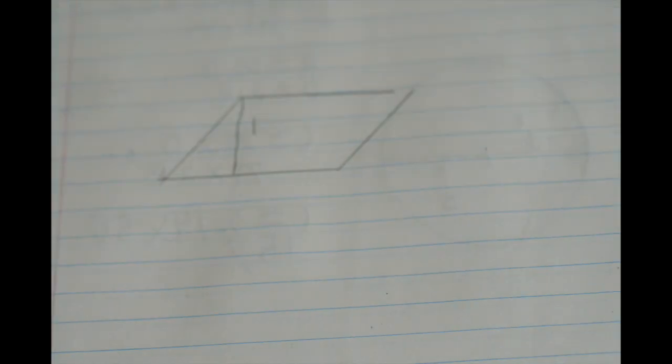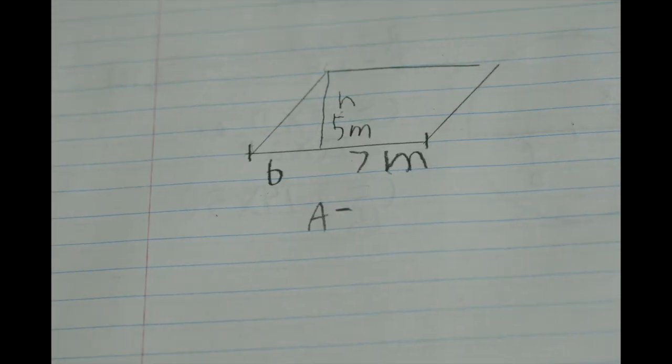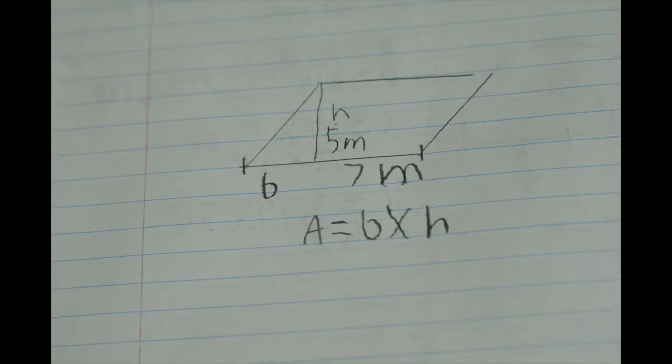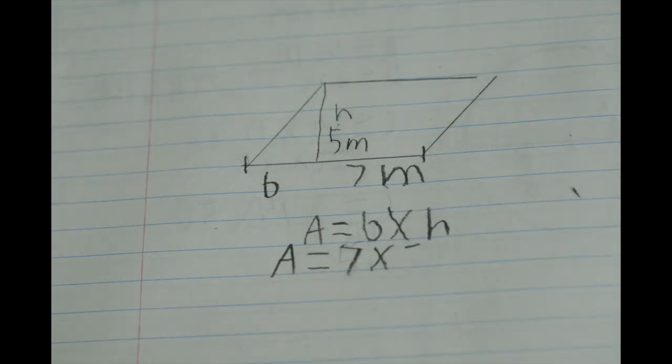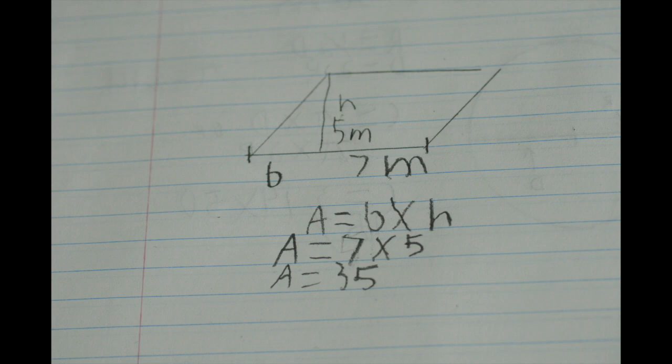Now Toco the Toucan has a parallelogram snack bar in the middle of his dome. He wants a parallelogram because why not? So the height of it is 5 meters and the base is 7 meters. So the area equals base times height. So the area is 7 times 5, and therefore the area is 35 meters squared.